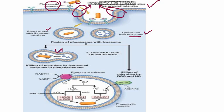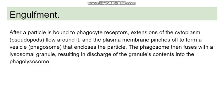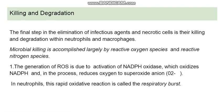Killing of the microbe can take place by an enzymatic method — the hydrolytic enzymes present in the phagolysosome can directly kill the microbe. The other method is by reactive oxygen species, through free radical production. Free radicals are of two types: reactive oxygen species and reactive nitrogen species.